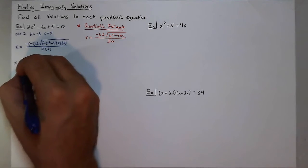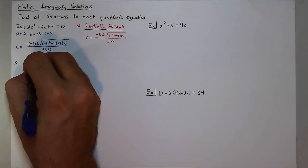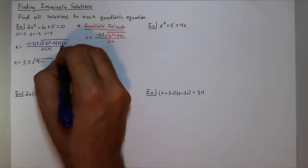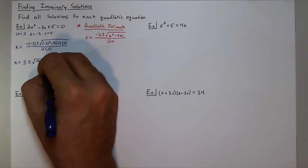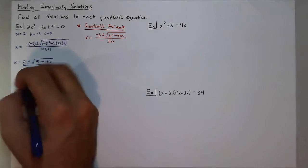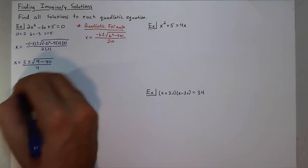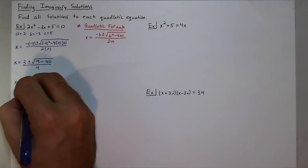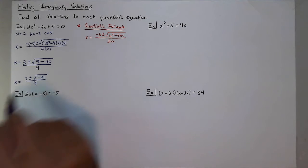I'll get x equals positive 3 plus or minus the square root of 9 minus 4 times 2 times 5, so that's 8 times 5, so 40, all over 4. Then I can see here that I'll get x equals 3 plus or minus the square root of negative 31, which is going to lead to an imaginary number.